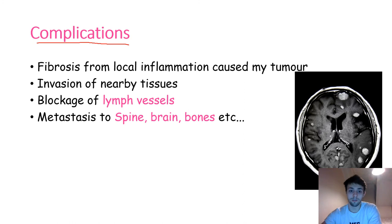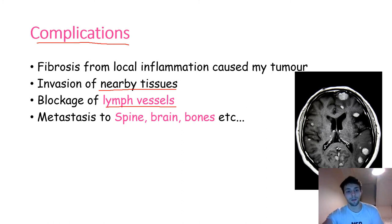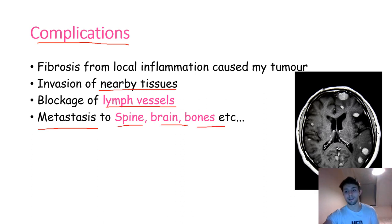Potential complications of breast cancer include fibrosis from local inflammation caused by the tumor, invasion of nearby tissues, and blockage of lymph vessels — which can cause problems draining certain areas, such as very swollen arms. A major risk, especially in invasive cancer, is metastasis to different areas of the body — mostly the spine, brain, and bone. An image shows brain metastases from breast cancer with large scattered lesions.